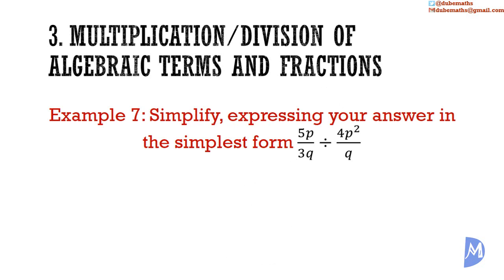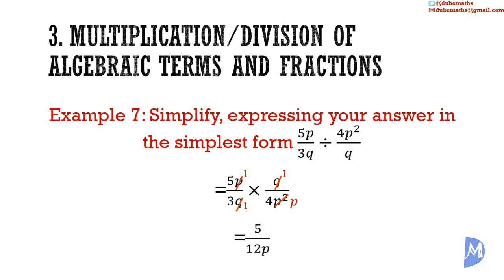Example 7. Simplify, expressing your answer in simplest form: 5p over 3q divided by 4p squared over q. When dividing fractions, we multiply by the reciprocal. So we get 5p over 3q multiplied by q over 4p squared. The q's cancel, and the HCF of p and p squared is p, so p divided by p is 1 and p squared divided by p is p. Multiplying the numerators gives 5, and the denominators give 12p. This fraction cannot be reduced further, so the answer is 5 over 12p.